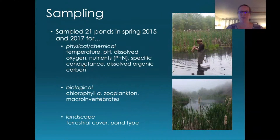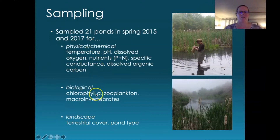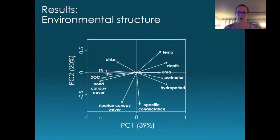In 2015 and 2017, we went out in the spring and sampled ponds for physical and chemical parameters — a basic suite of variables. We also sampled for chlorophyll, zooplankton, macroinvertebrates, and some landscape variables. These ponds can be so short-lived that you have a short window of time to sample, and sometimes we just weren't able to get to some ponds in time.